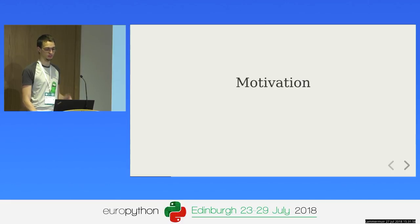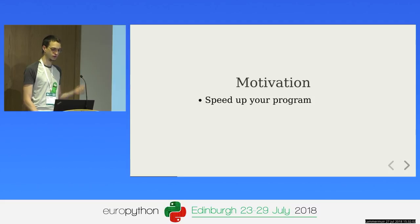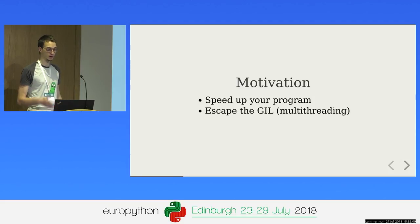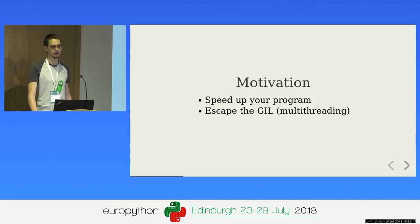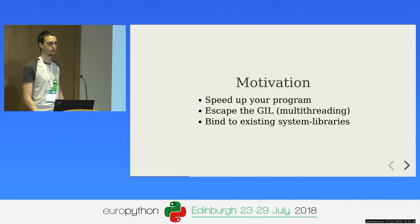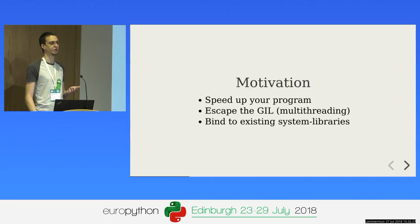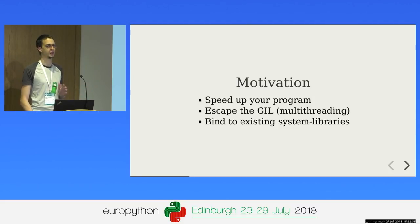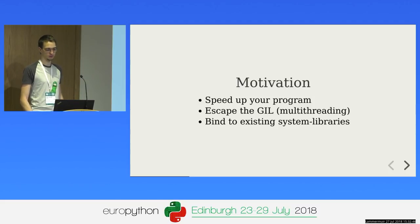There might be multiple motivations for why you'd want to do this. The most intriguing and highest-impact one is to speed up your program — that's always the primary reason. But you might also want to escape the GIL in order to do proper multi-threading, since in Python you can't do proper multi-threading without jumping through hoops. You might also want to bind to existing system libraries — for instance, if you're a scientist wanting to bind to existing C++ libraries, Rust can serve as glue code. Today we're only going to explore the speed-up use case.